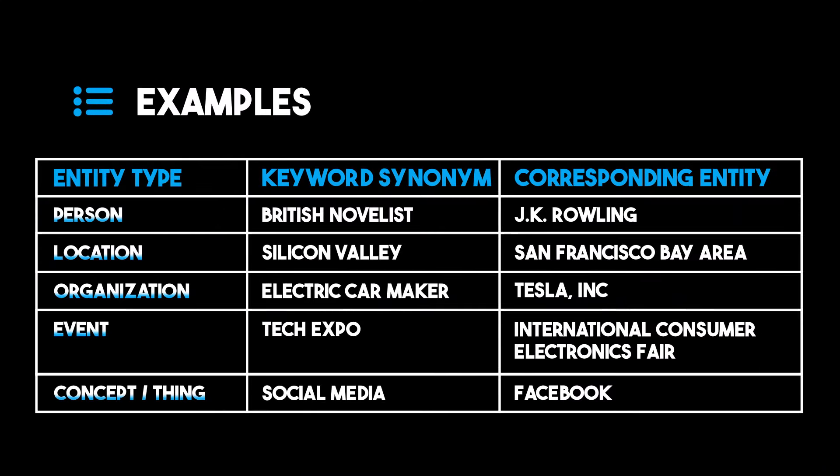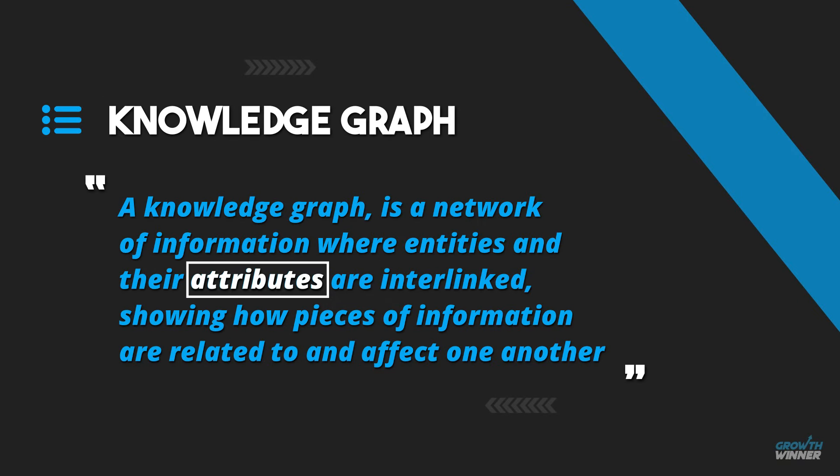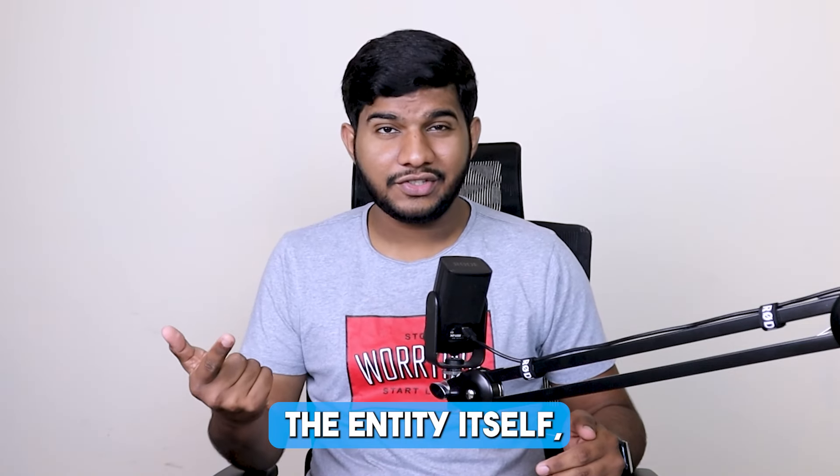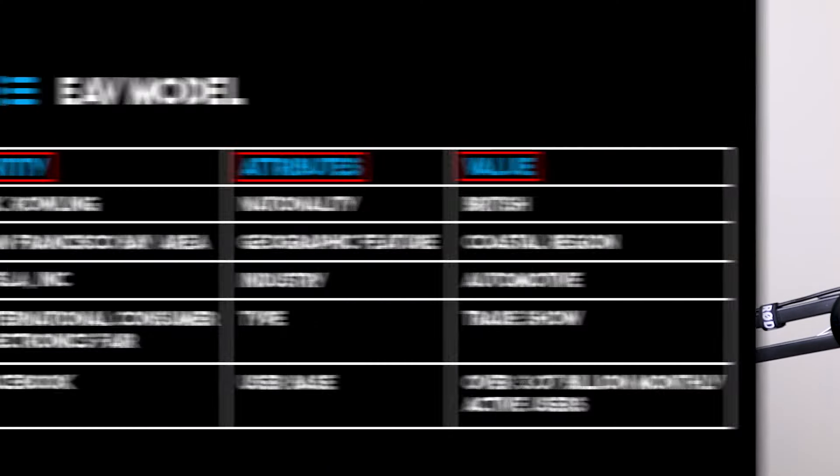Wikipedia acts as the primary trusted seed set for the knowledge graph. To simplify it, for an entity to be valid, it must have its own dedicated page on Wikipedia. You can see some examples on the screen right now. I mentioned attributes of entities earlier in my knowledge graph definition — color is the attribute of chair, but when I say black chair, that's the value. So we have three things here: the entity itself, the attribute, and the value.